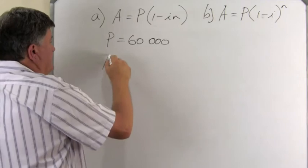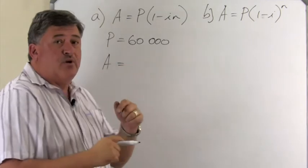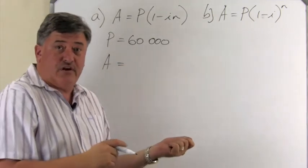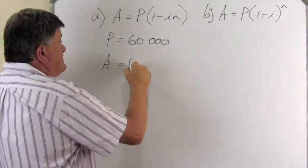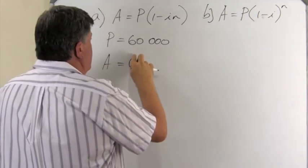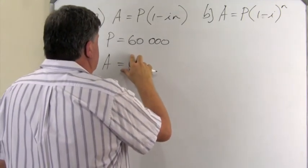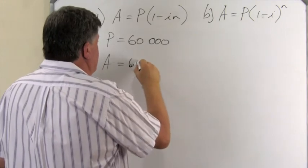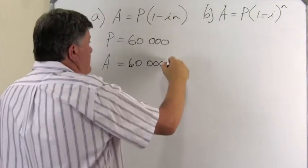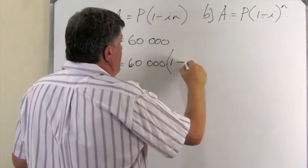So, we want to calculate A, that is what we call the book value of the car. We substitute the 60,000 into our formula, and we say one minus, now we need to find I.